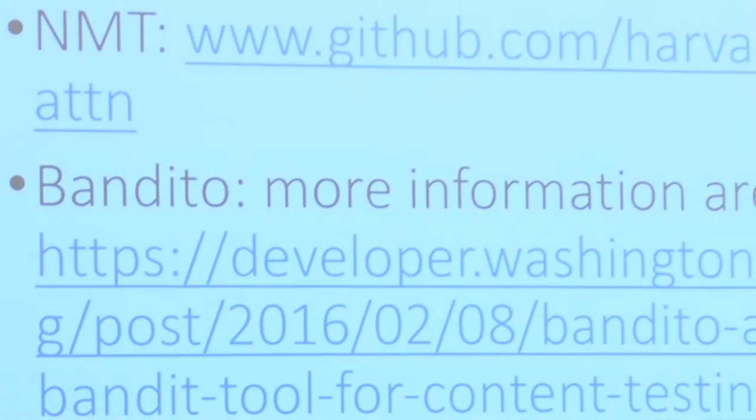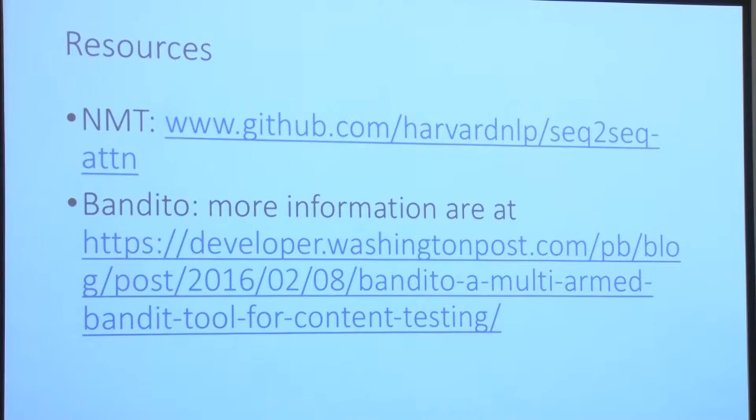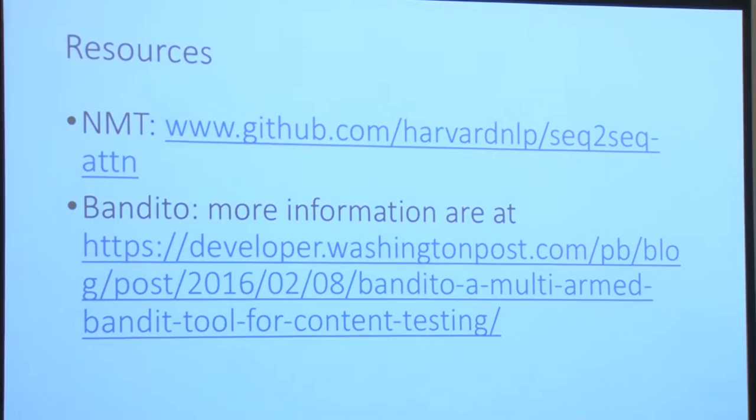The great thing about this work is it's open source. The neural machine translation package is available on GitHub. If you want to know more about the variant testing tool Bandito at the Washington Post, feel free to go to their web page and read about it.